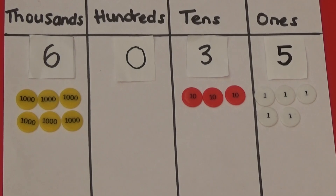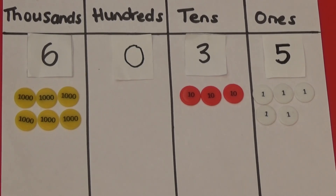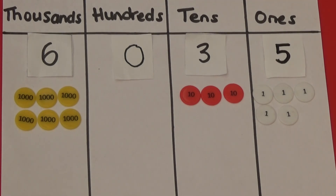This time, we're going to look at why sometimes when we subtract 100, the 1000s also change. My number here is 6035. If I want to take away 100, there is a problem — there are no 100s in the 100s column for me to take away. So I'm going to exchange one of my 1000s for 10 100s and put them in the 100s column.